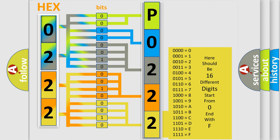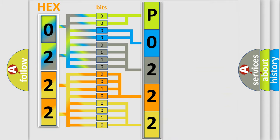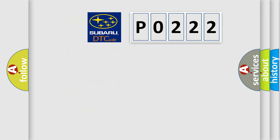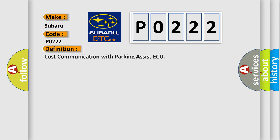We now know in what way the diagnostic tool translates the received information into a more comprehensible format. The number itself does not make sense to us if we cannot assign information about what it actually expresses. So, what does the Diagnostic Trouble Code P0222 interpret specifically for Subaru car manufacturers? The basic definition is: Lost communication with parking assist AQ.